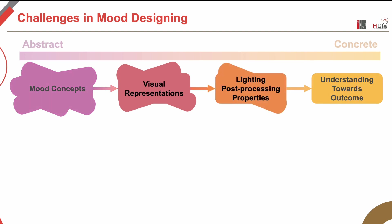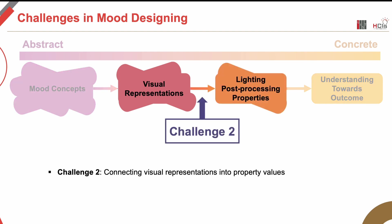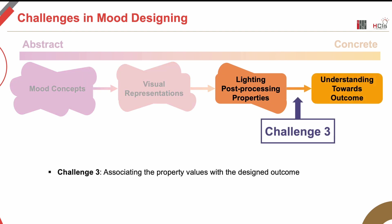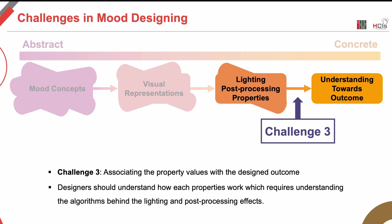The second challenge involves the labor-intensive baseline workflow required to connect visual representations to actual property values. Designers follow a trial-and-error process to create the visual representation of a scene, and this iterative design process is considered labor-intensive and difficult to adopt. The last challenge arises from properties that are difficult to understand. Designers need a comprehensive understanding of how each property affects different parts of the scene, and find it difficult to select appropriate properties to adjust during the design process.